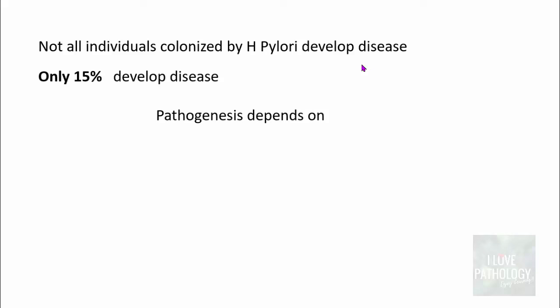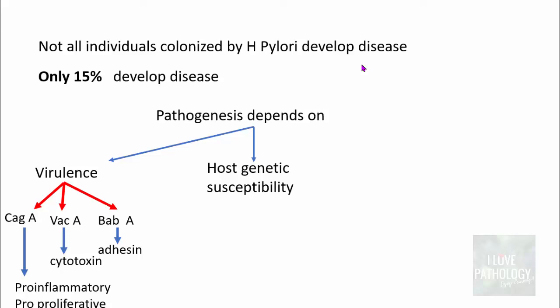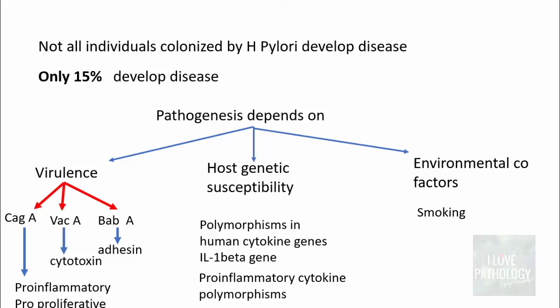The pathogenesis depends on three factors: virulence — including CagA (pro-inflammatory and pro-proliferative), VacA (cytotoxin), and BabA (responsible for adhesion); host genetic susceptibility — individuals with polymorphisms in human cytokine genes, particularly interleukin-1 which is pro-inflammatory, are more susceptible to inflammation; and environmental co-factors — for example, smoking damages the gastric mucosa, breaching normal mucosal defense mechanisms and allowing H. pylori to infest more easily.